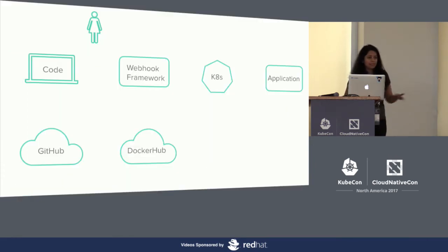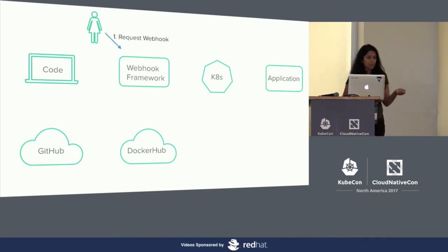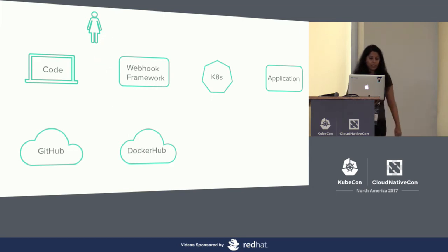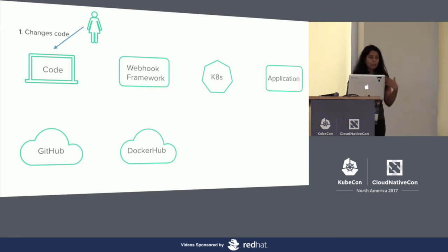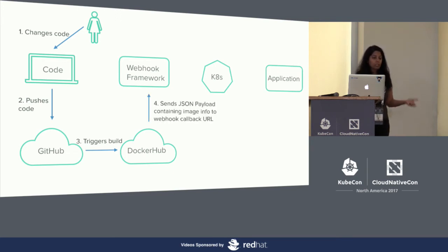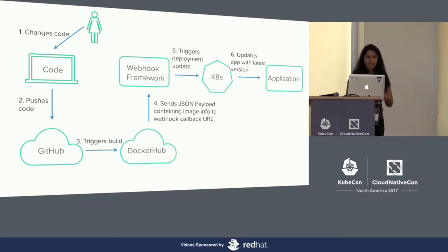Let's go back to our pipeline diagram and see what we have using the webhook. First, the user makes a request to get a callback URL, and our webhook framework returns a generated callback URL. The user then adds it to Docker Hub as a webhook. Once this initial setup is done, the user makes code changes and pushes them to GitHub. Because of Docker Hub's automated build, this triggers the build of a new image tag. Docker Hub then notifies us using the webhook. The webhook framework in response triggers the update to our deployment, and finally our app gets updated.